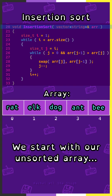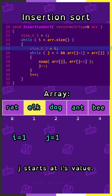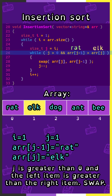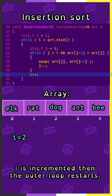We start with our unsorted array. i begins at 1, and j starts at i's value. Array sub j minus 1 is rat, and array sub j is elk, and j is greater than 0. Since the left item is greater than the right item, we swap. Then we decrement j. Now j is 0, so the inner loop ends. i is incremented to 2, and then the outer loop restarts.